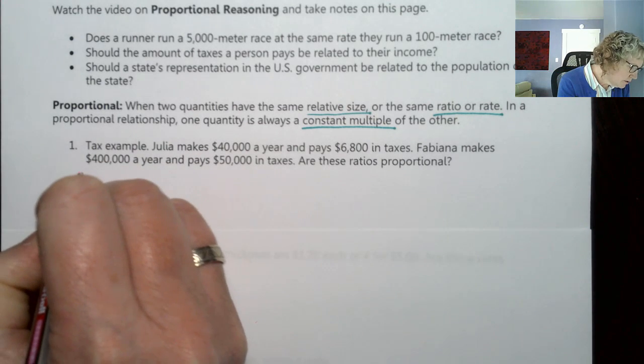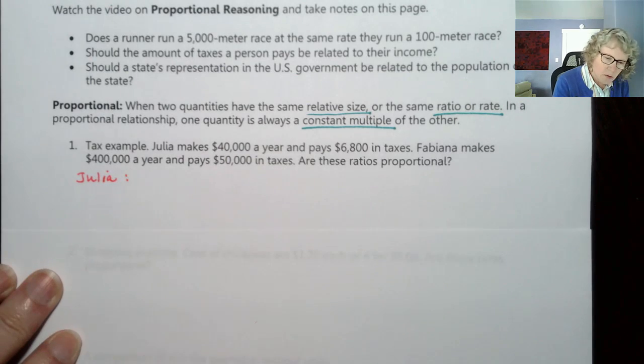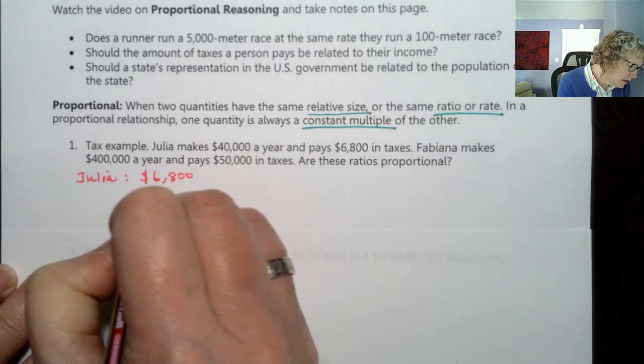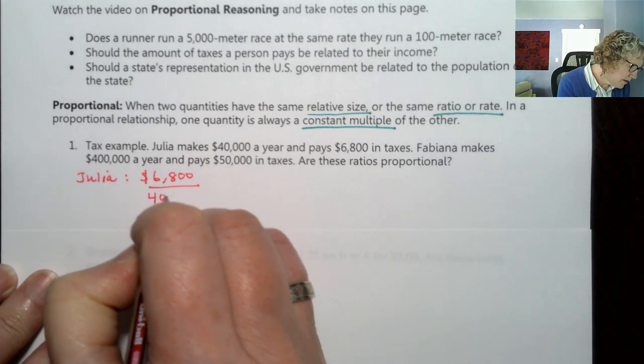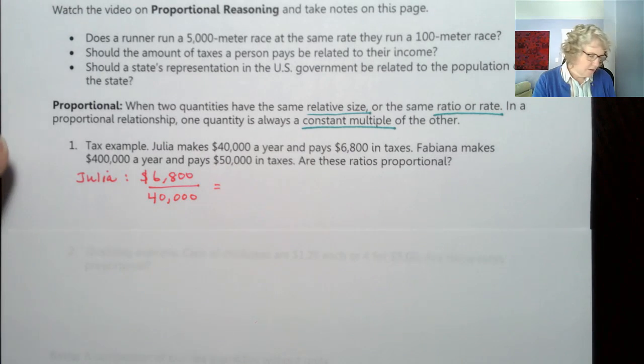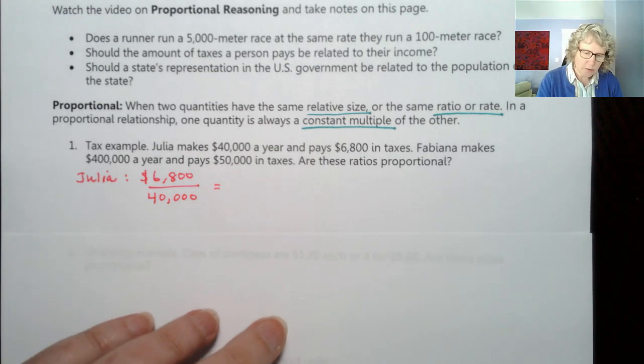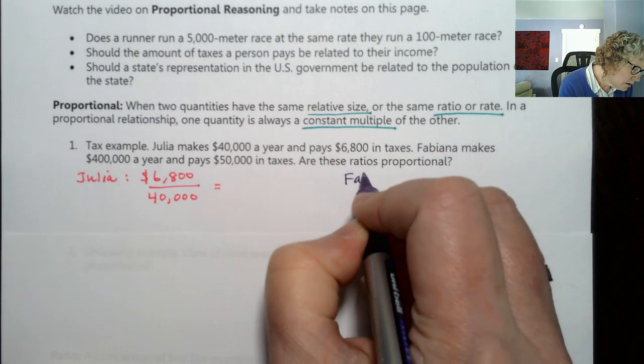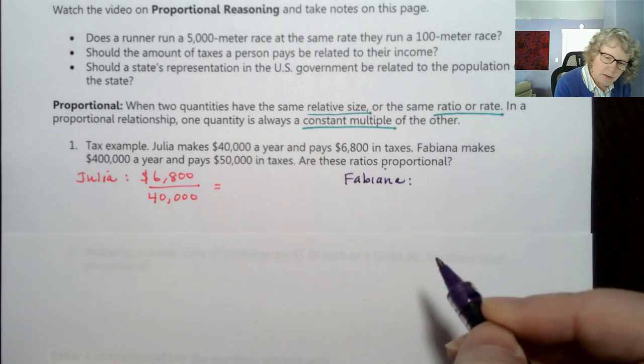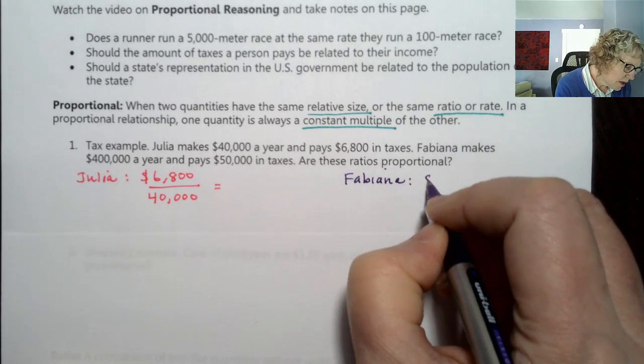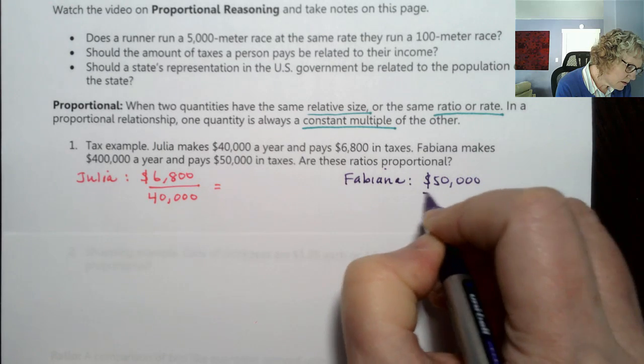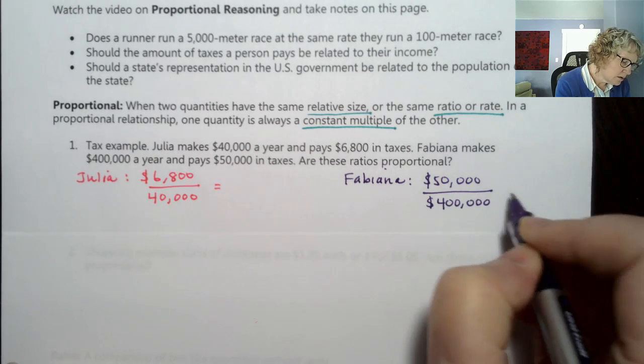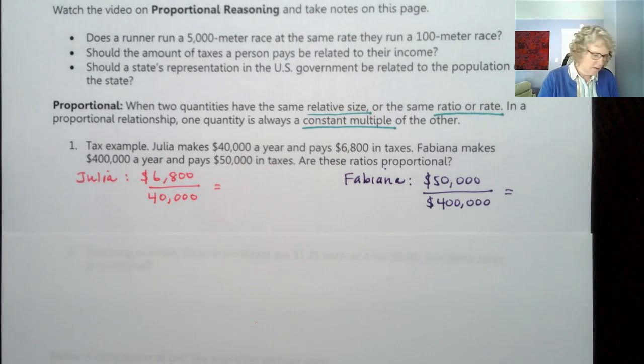Let's do Julia over here. Julia, and we'll put the $6,800, if we divide that by $40,000, we'll get a decimal, and we can turn that into a percentage. And for Fabiana, let's put her over here. She's paying $50,000 in taxes out of $400,000. Let's see what these equal.